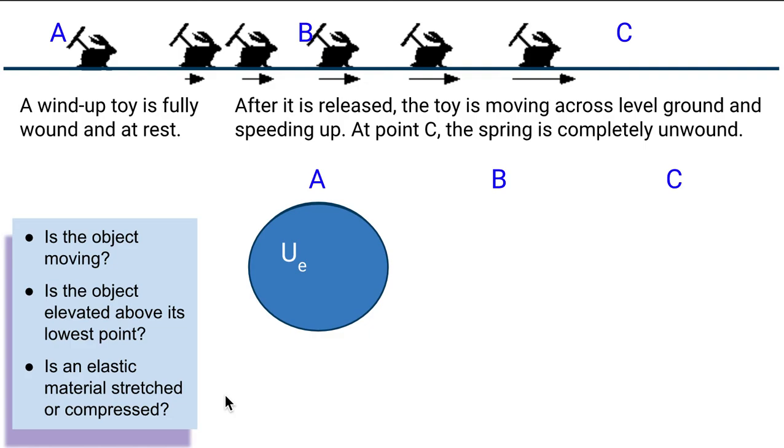Now, after it's released, the toy starts to move. If it's moving, it has kinetic energy. And at point B, it's not quite all released yet. And so there would be some elastic potential still, but it's going away. It's being transformed into kinetic energy, energy of motion. But the pie is the same size. The total energy is remaining the same.